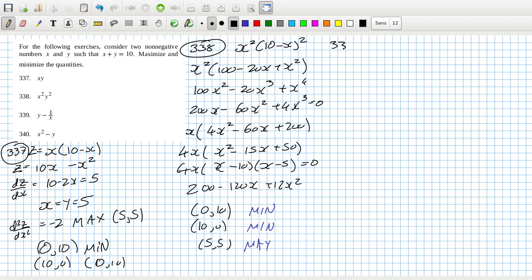So 339, that's 10 minus x minus 1 over x. So the derivative is minus 1 plus 1 over x squared equals 0.